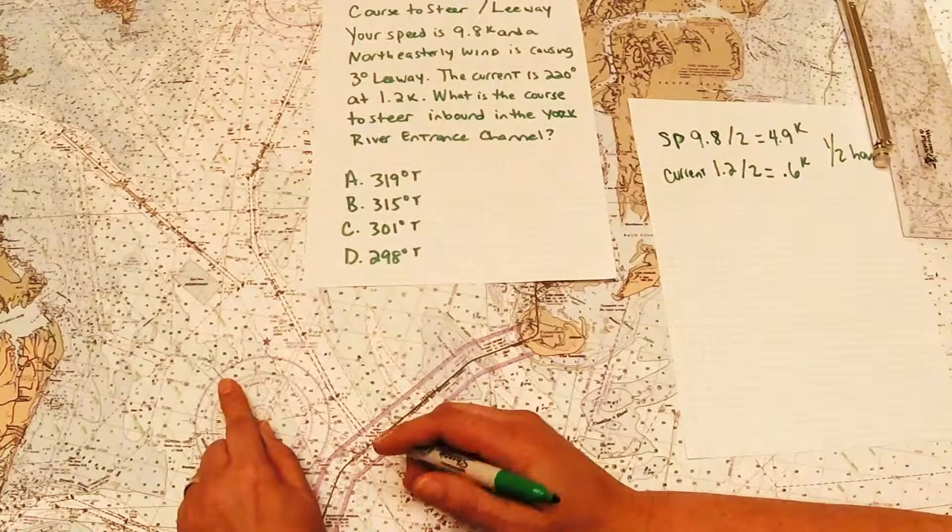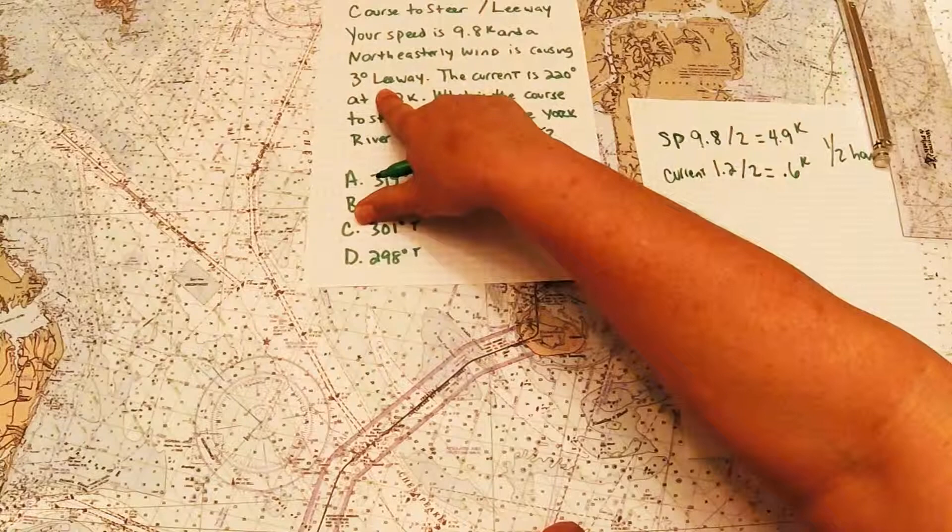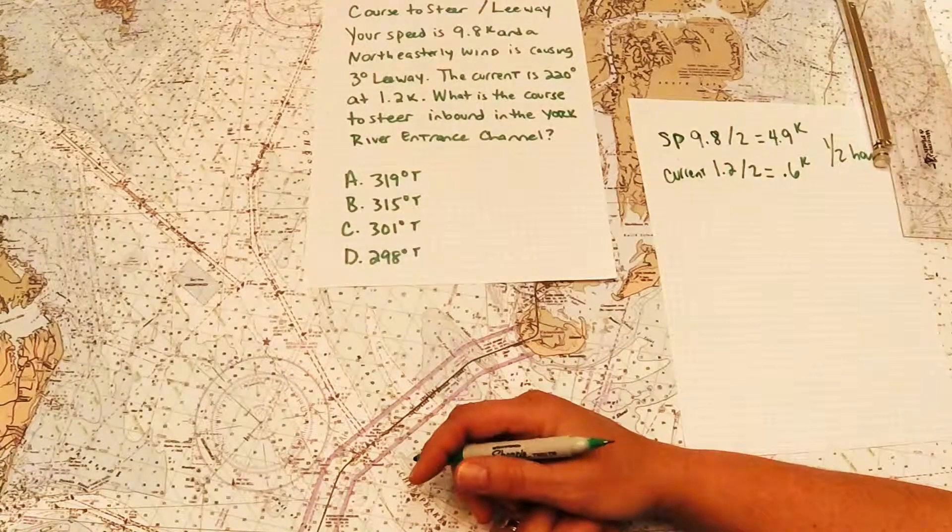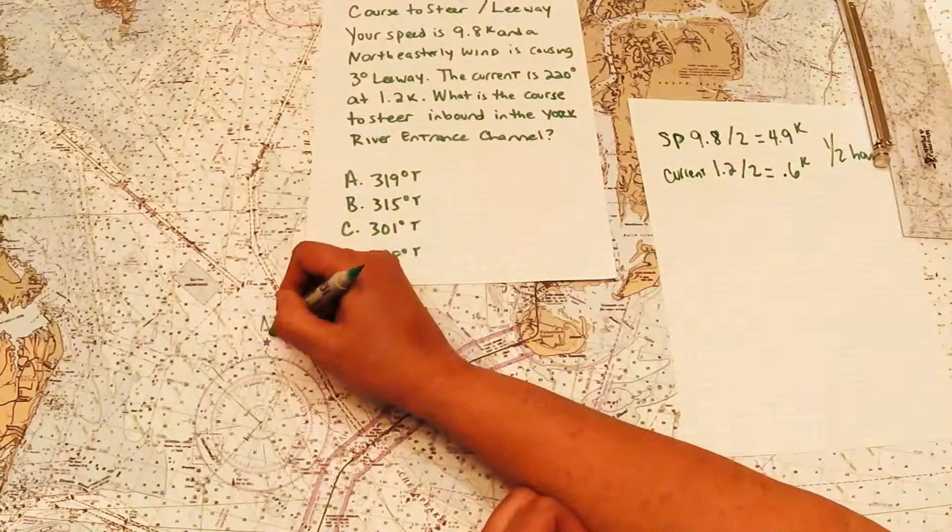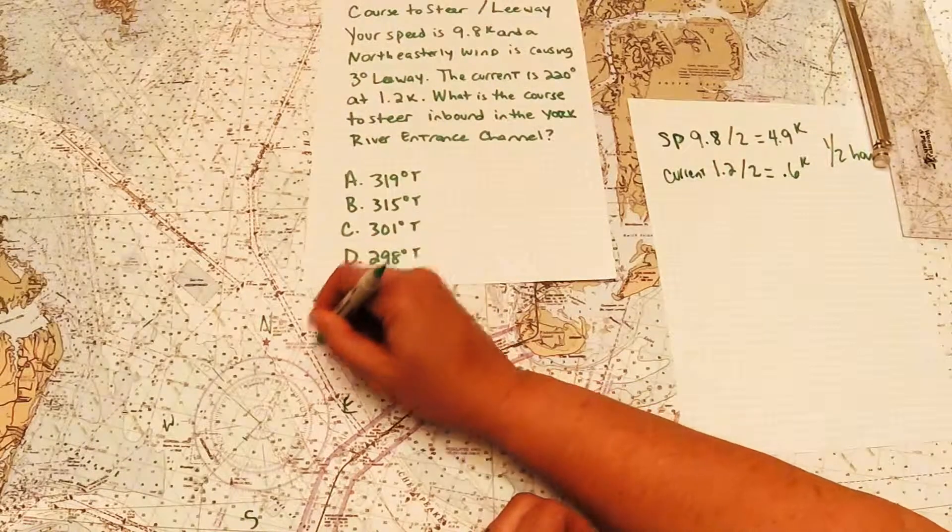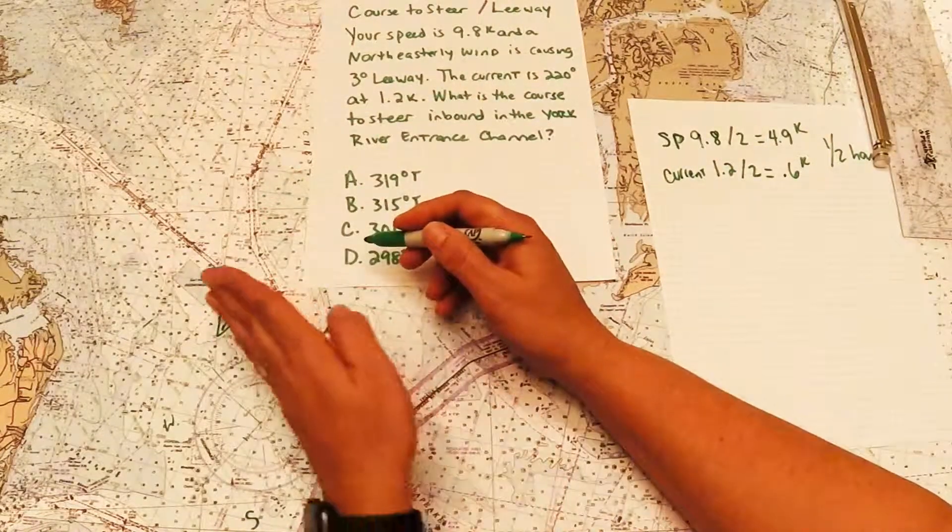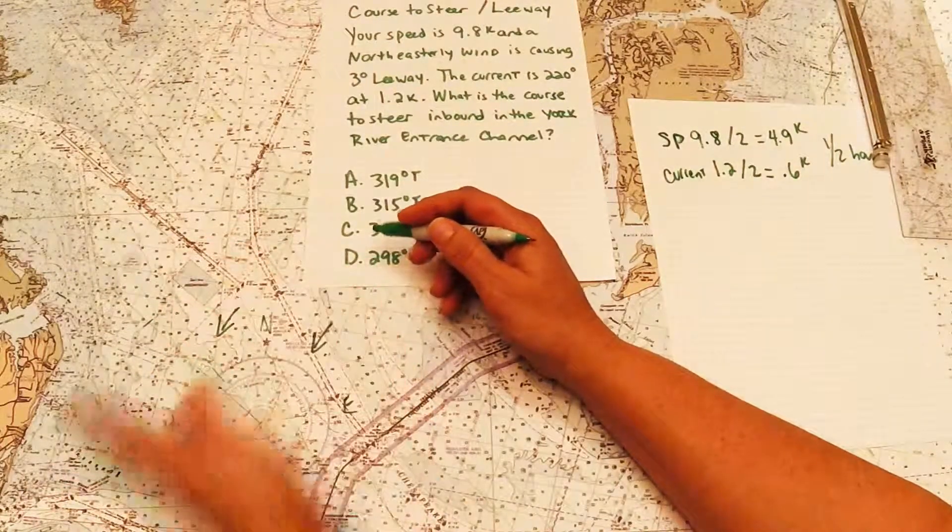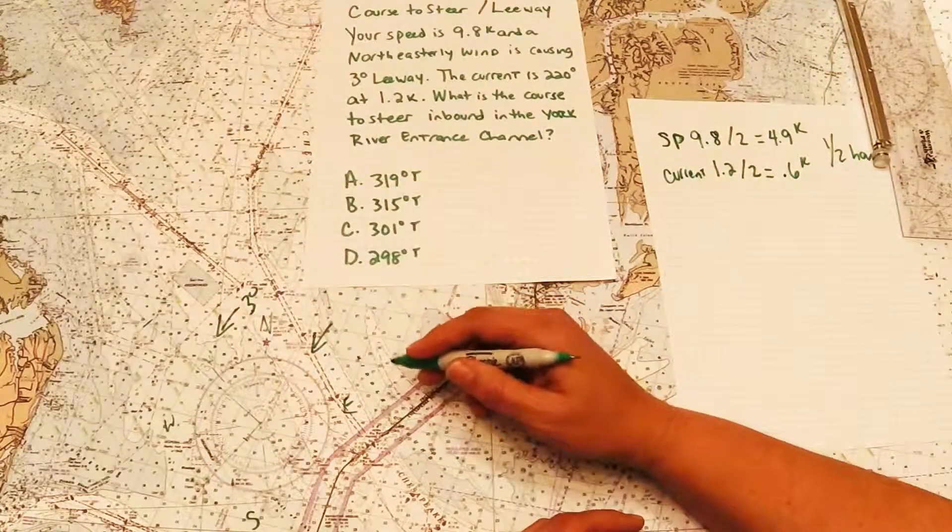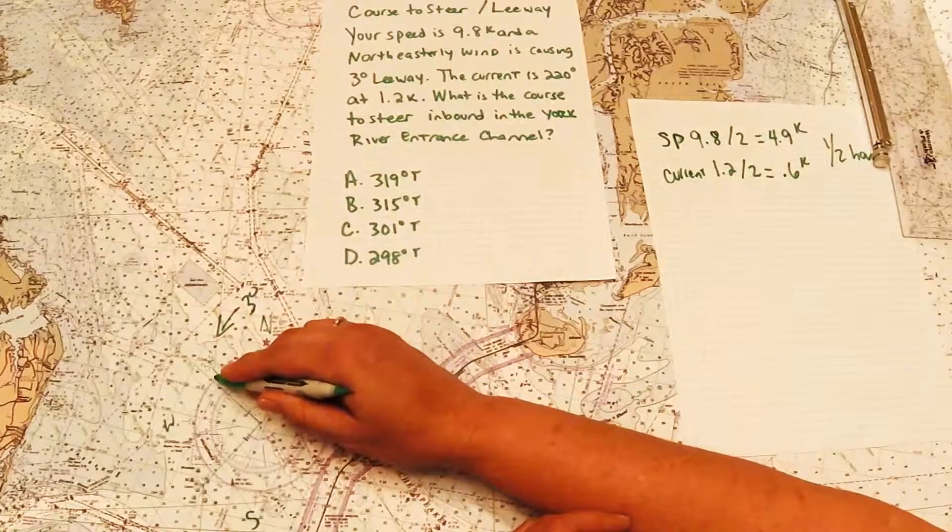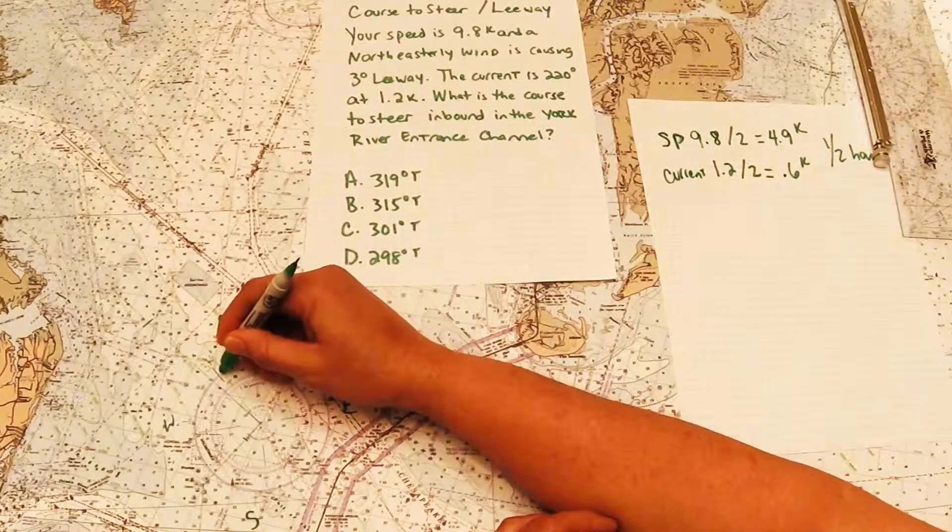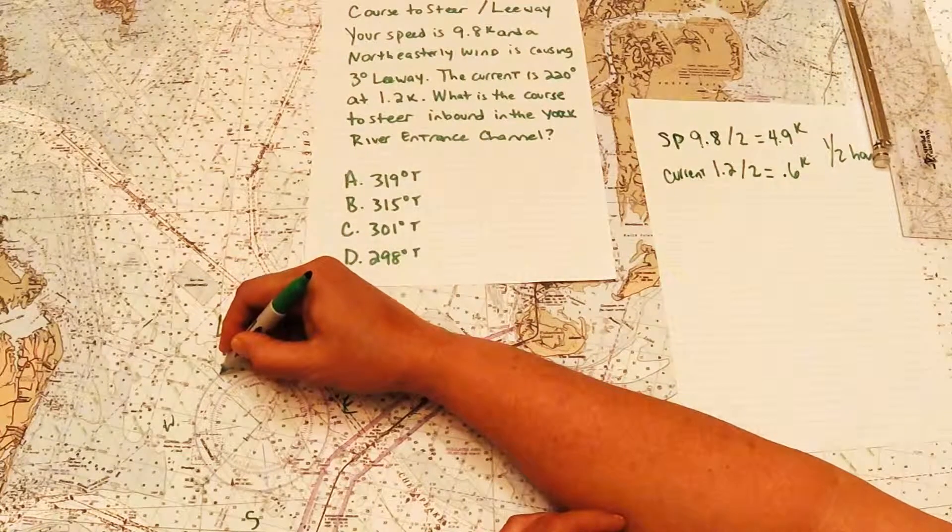But I have one more factor that I have to deal with, and that's the wind. And it says that the wind is northeast causing 3 degrees of leeway. So when we think about wind, it's always where it's coming from. So here is north, here is east, here is south, and here is west. The wind is coming from the northeast. So the wind is pushing us down to something lower, lower numbers. And it says it's 3 degrees. So in order to compensate for that 3 degrees of leeway, what we're going to do is steer into the wind 3 degrees. So if I started at 316, I'm going to steer to the right 3 more degrees, 317, 318, 319.